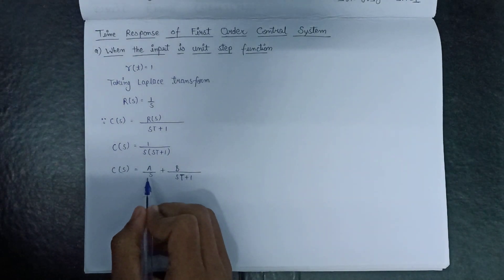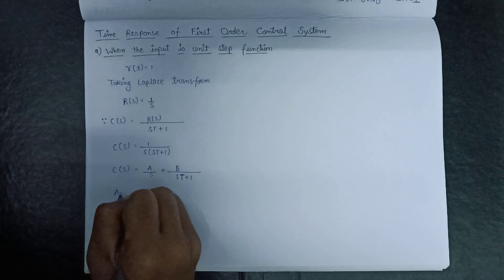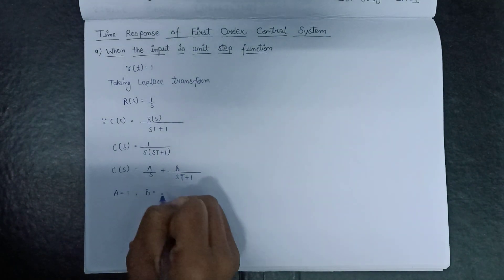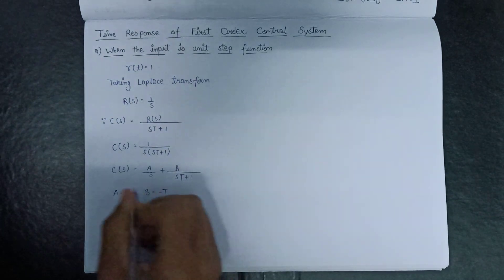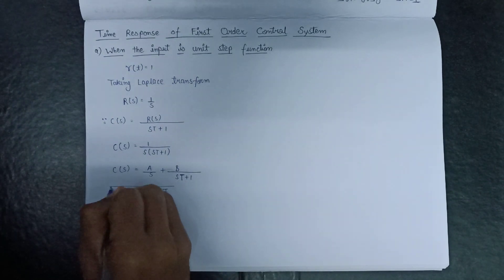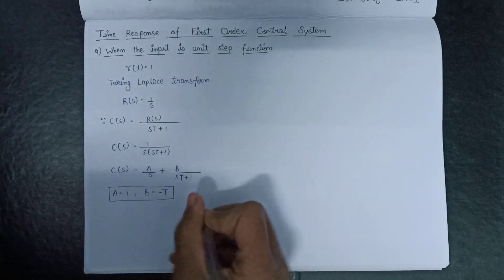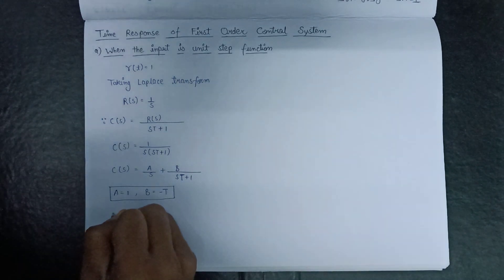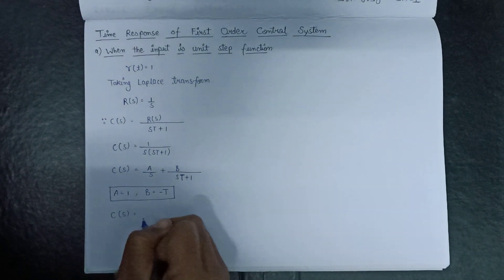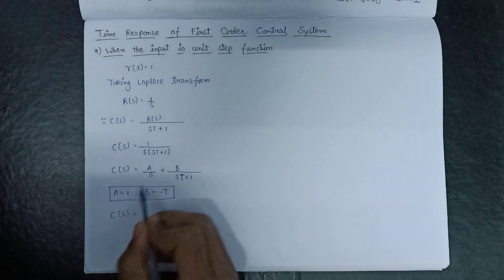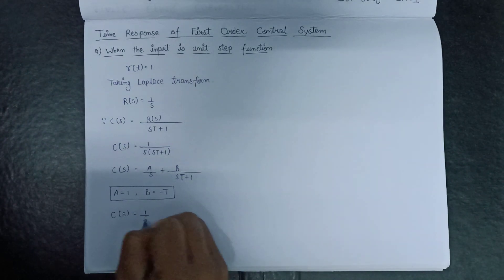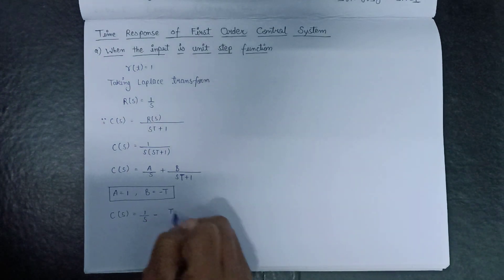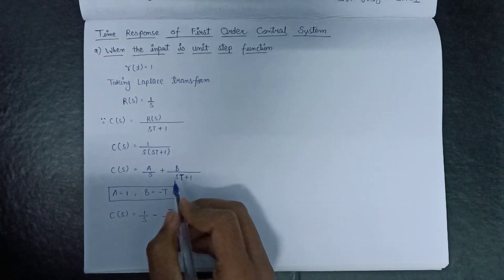On evaluating this expression, we get the value of A equals 1 and the value of B equals minus T. These are the values of A and B that we substitute back into the equation, giving C(s) equals 1/s minus T over (sT + 1).